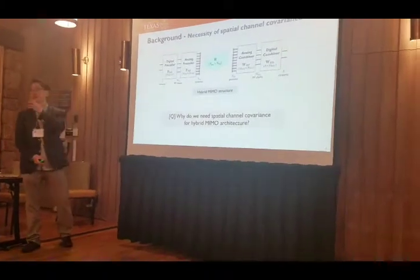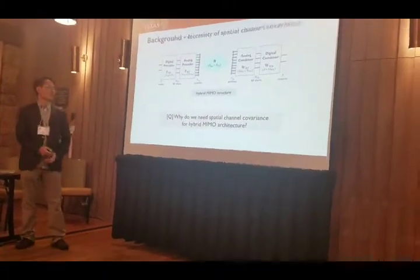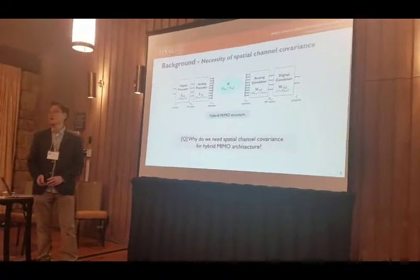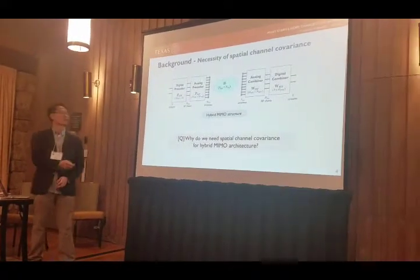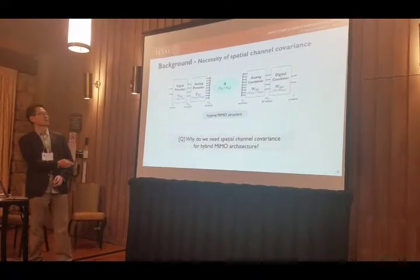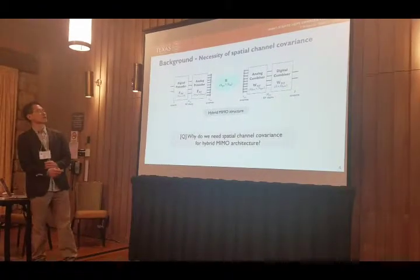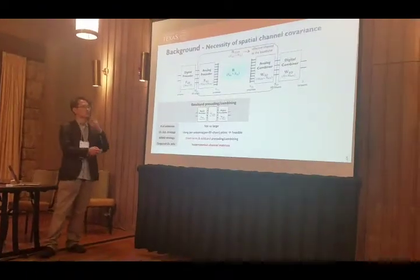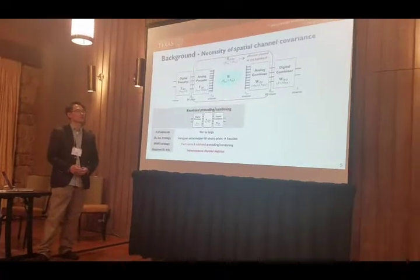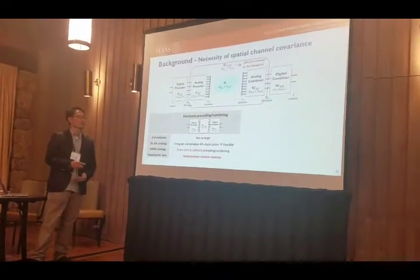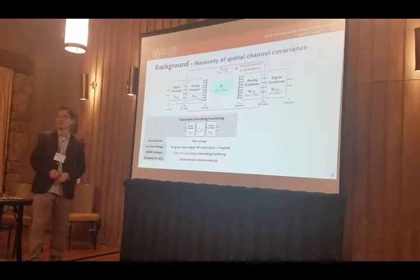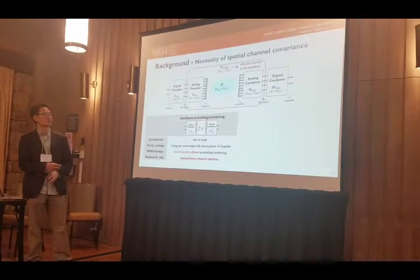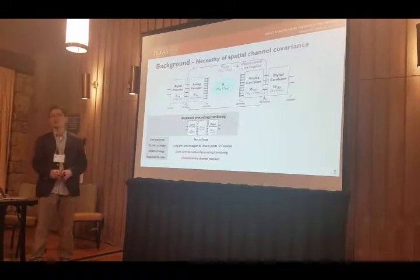Now let's start with this question: why do we need special channel covariance for hybrid massive MIMO architecture? In this hybrid architecture, the base station pre-coding combines the number of antennas, so the number of effective antennas is equal to the number of RF chains, which is not so large.